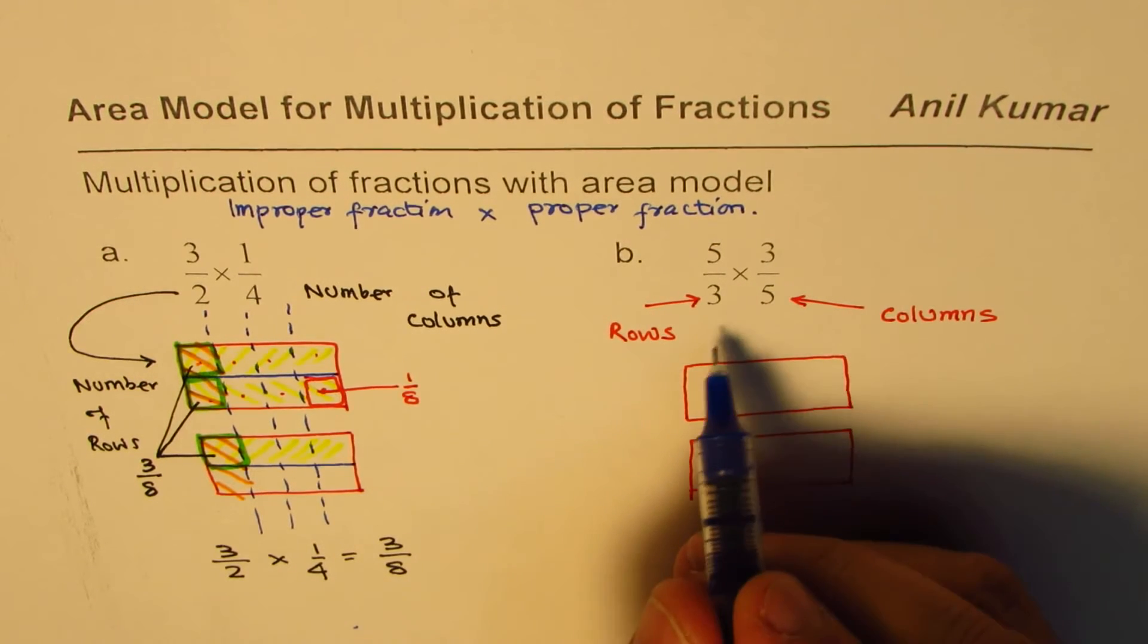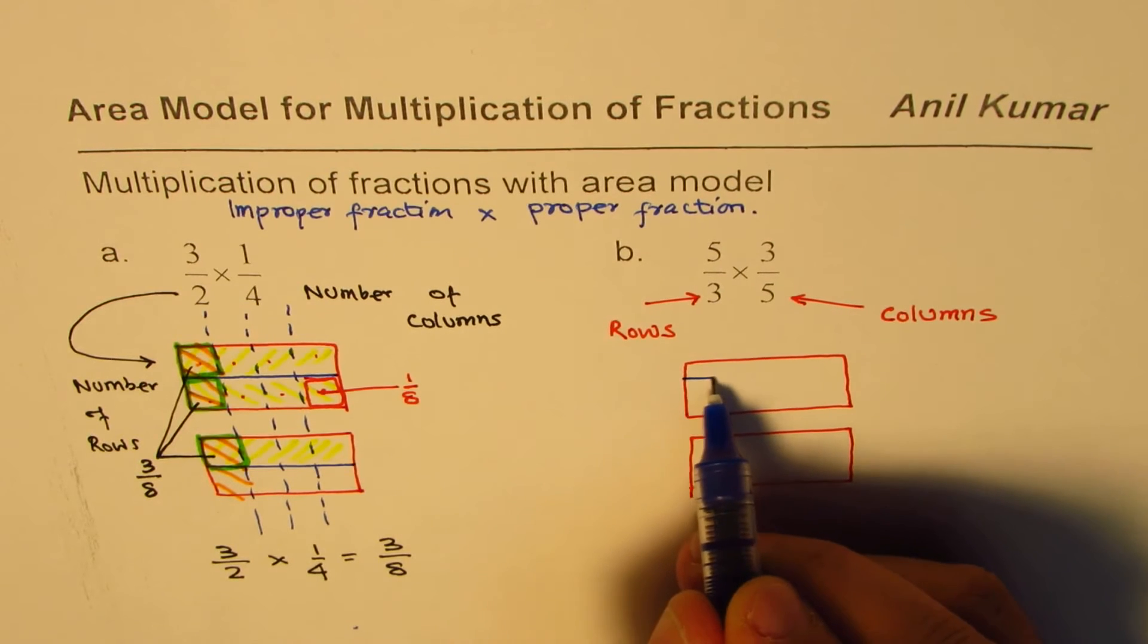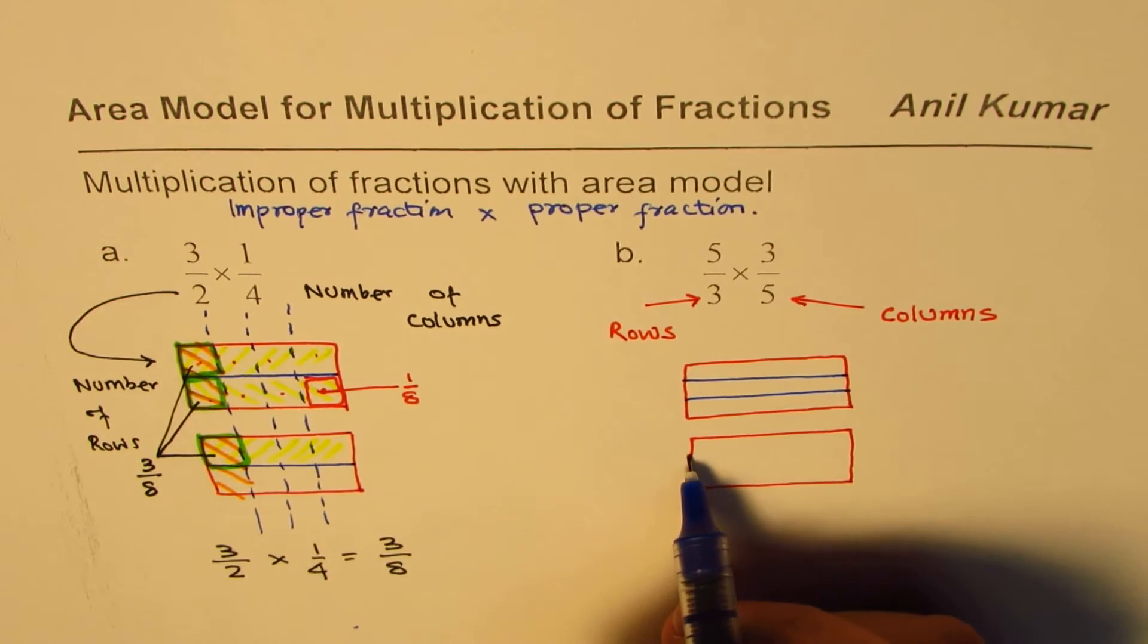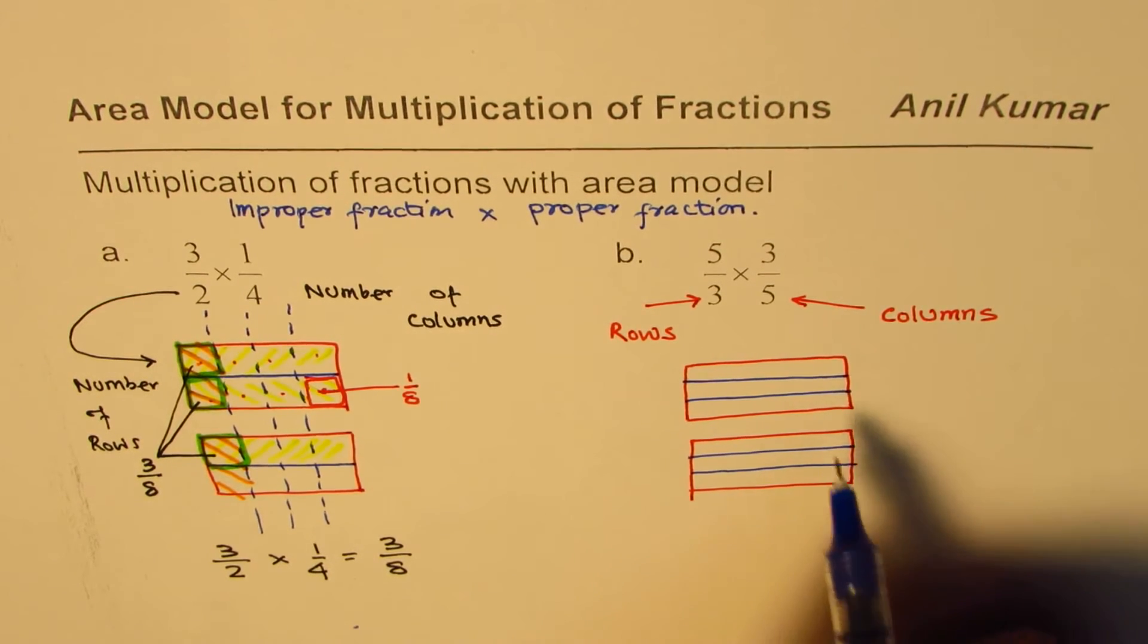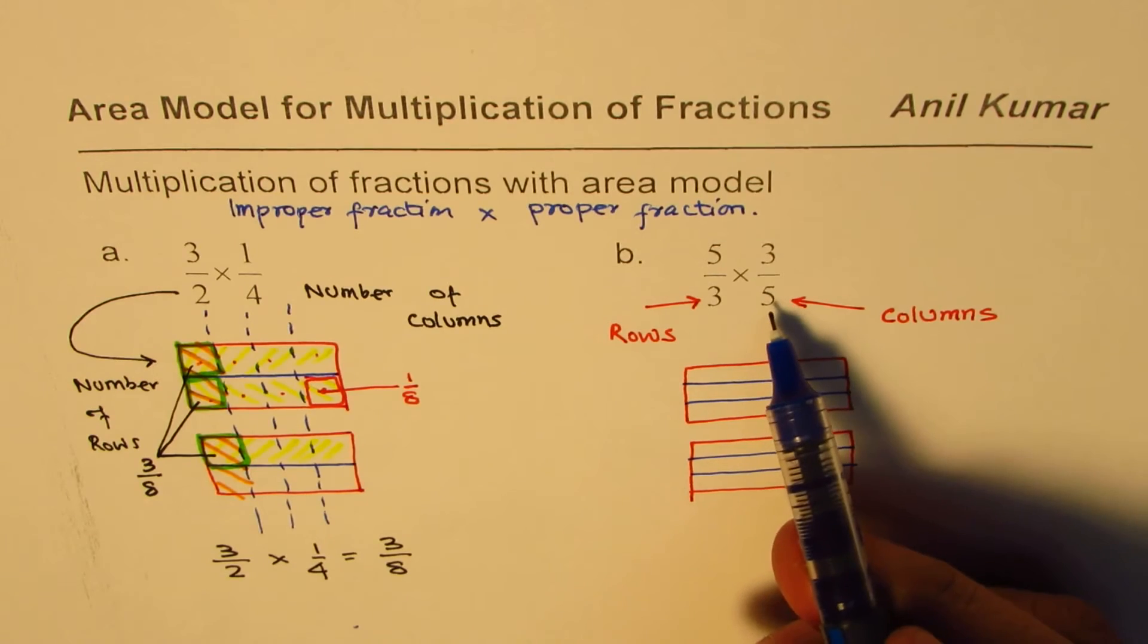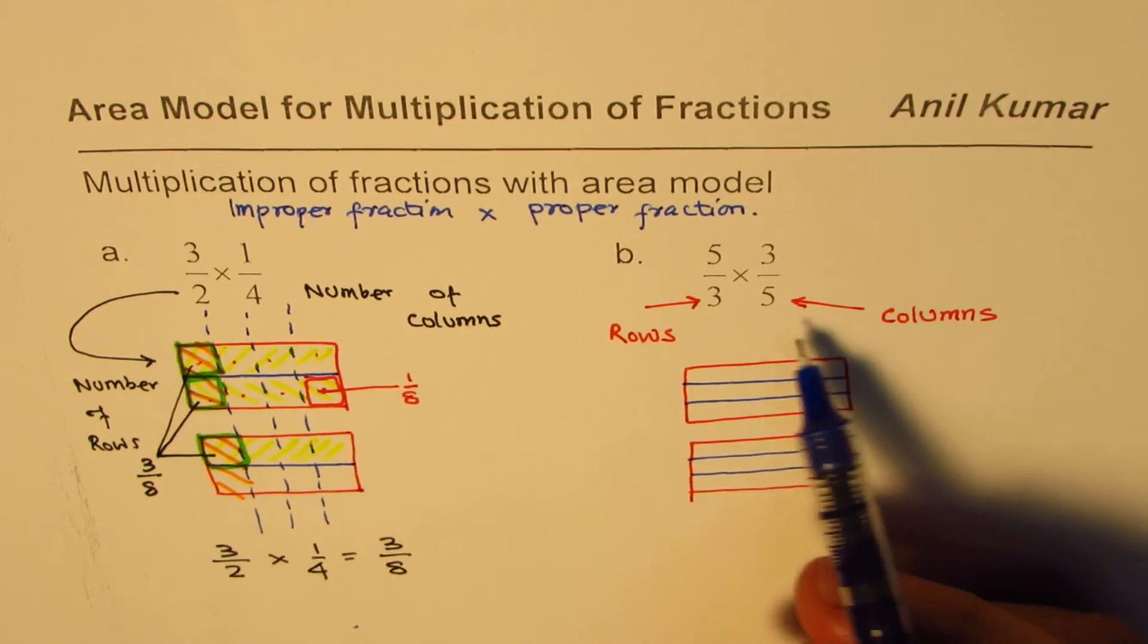Each rectangle will be divided into 3 rows: 1, 2, and 3. 1, 2, and 3. At this time, you can also divide them into 5 columns.